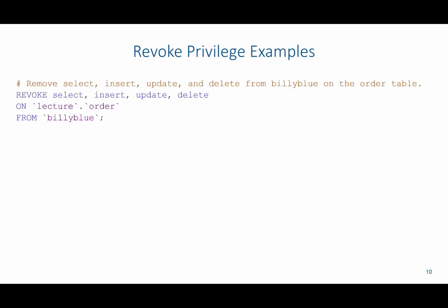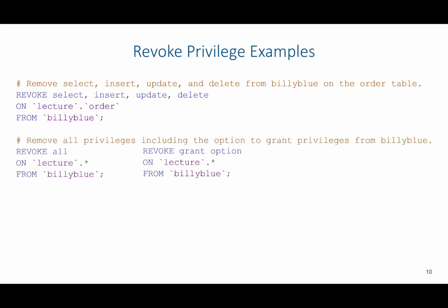For example, to remove SELECT, INSERT, UPDATE, and DELETE privileges from Billy Blue on the order table, we say: REVOKE SELECT, INSERT, UPDATE, DELETE ON lecture.order FROM BillyBlue. If we wanted to remove all privileges we granted, we'd revoke them separately: REVOKE ALL ON lecture.* FROM BillyBlue — and then revoke grant option separately as well: REVOKE GRANT OPTION ON lecture.* FROM BillyBlue. With DBA access, you could do both in one command: REVOKE ALL, GRANT OPTION FROM BillyBlue.